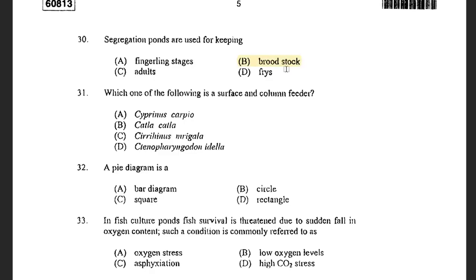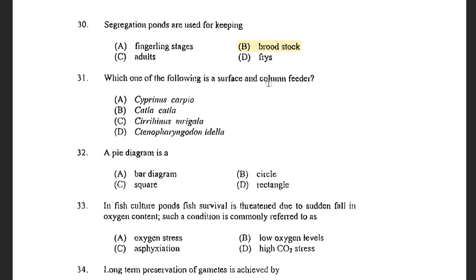Next question: Which one of the following is a surface and column feeder? Options are Cyprinus carpio, Catla catla, Cirrhinus mrigala, and Ctenopharyngodon idella. The answer is grass carp, that is Ctenopharyngodon idella. Catla and silver carp are surface feeders. Grass carp is a column and surface feeder, and Mrigal is a bottom feeder.